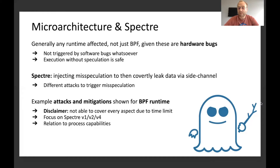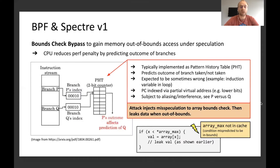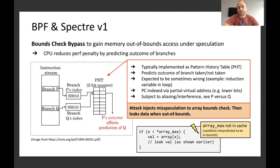I will focus here on Spectre V1, V2, and V4, and later explain a bit more on how they relate to process capabilities. In the case of Spectre V1, it's called bounds check bypass. It is basically to gain out-of-bounds access under speculation. The CPU reduces the performance penalty by predicting the outcome of branches. There's a table where the CPU can look up, based on a given index, whether a specific branch was taken or not taken. This is typically implemented in CPUs through a so-called PHT — pattern history table.